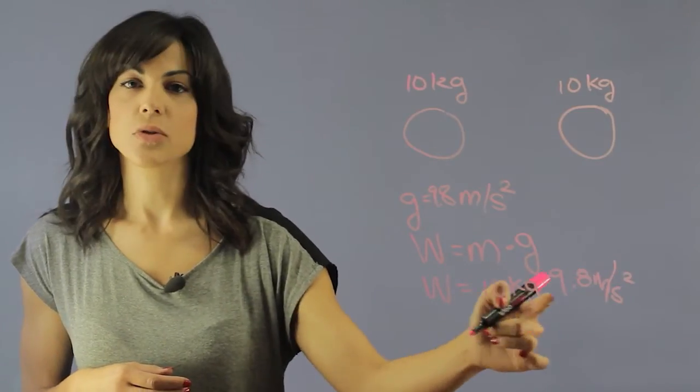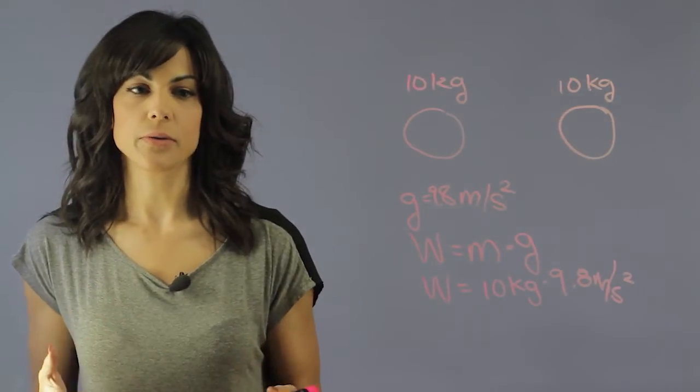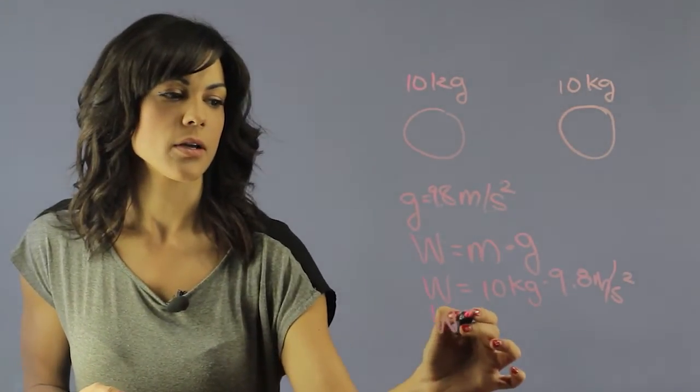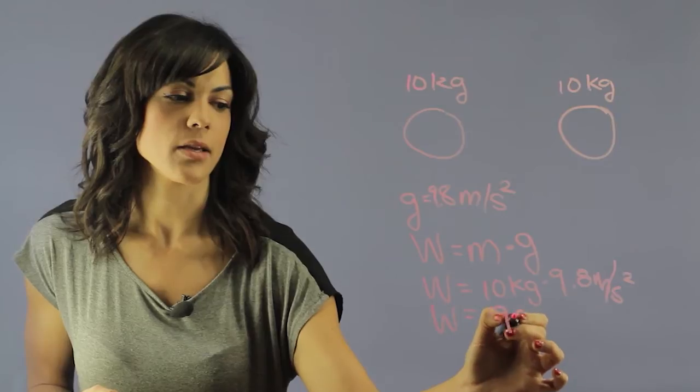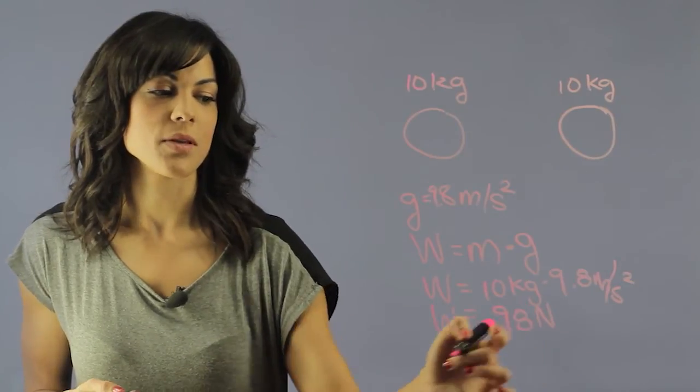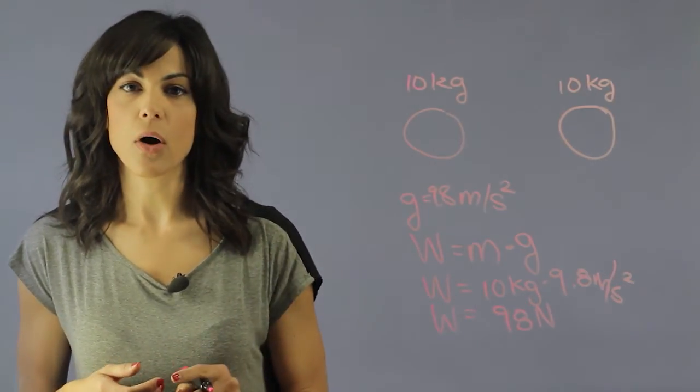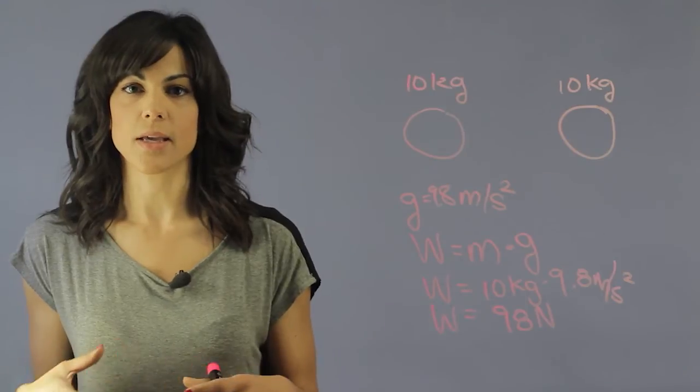So this has the units of force, therefore we can call that a Newton. So here, if we multiply this, we have 98 Newtons. So that means that the weight of the 10 kilogram ball on Earth will be 98 Newtons.